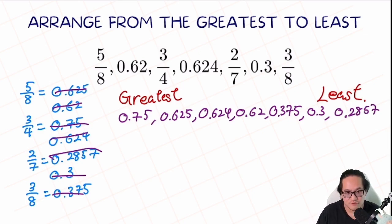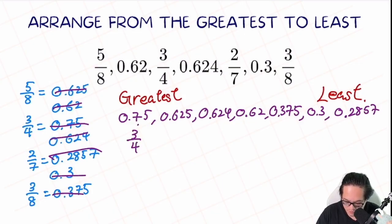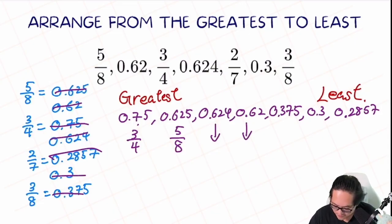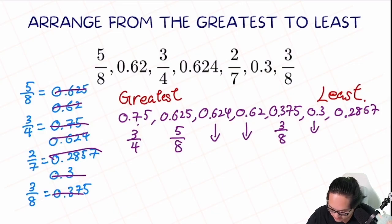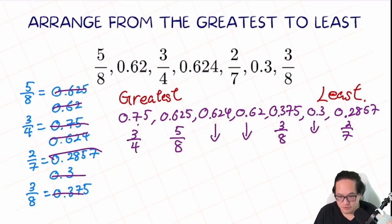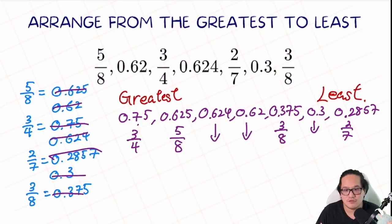The last step is to convert some of these numbers back to fractions so we can compare with the answer key. 0.75 comes from 3/4. 0.625 comes from 5/8. 0.624 and 0.62 stay as decimals. 0.375 comes from 3/8. 0.3 stays as is. And the last one comes from 2/7. So the final order from greatest to least is: 3/4, 5/8, 0.624, 0.62, 3/8, 0.3, then 2/7.